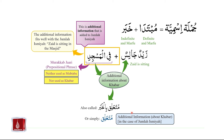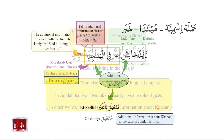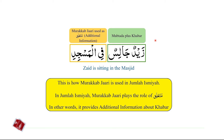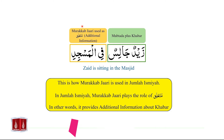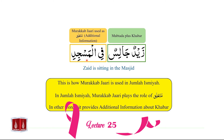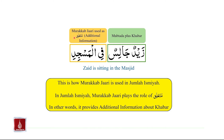The grammatical terminology for this additional information is mutallik bil-khabar, or we can simply call it mutallik. This is the additional information about khabar in jumla-ismiyah. To summarize, murakkab-e-jaari or prepositional phrase can be used in jumla-ismiyah and is typically used in the form of mutallik — additional information about khabar. To recap: zaidun jalisun is a jumla-ismiyah where zaidun is muptada, jalisun is khabar, and phil-masjiyah is murakkab-e-jaari playing the role of mutallik.